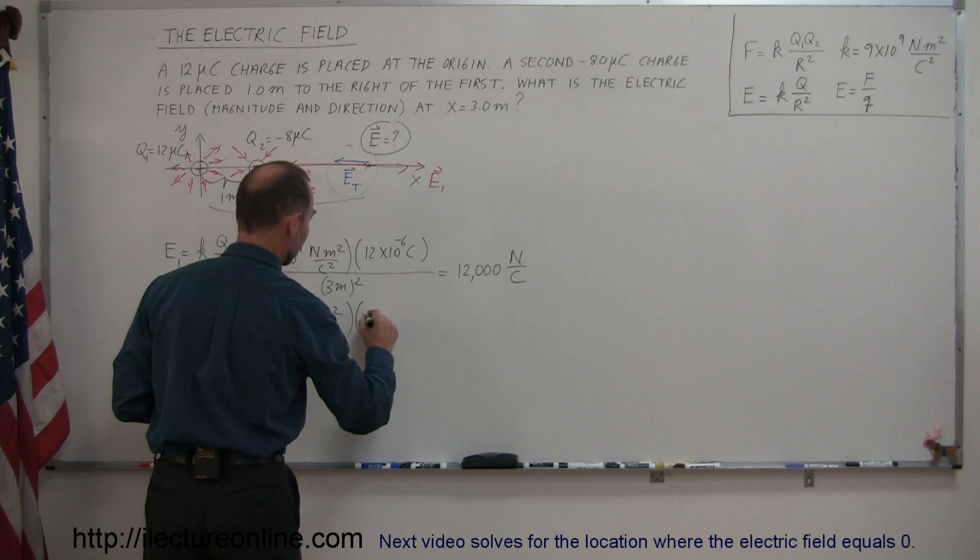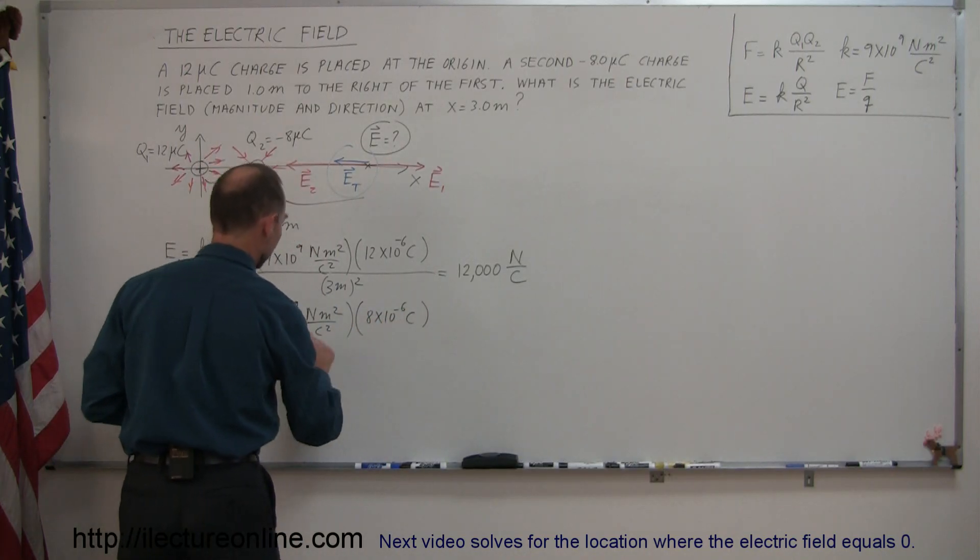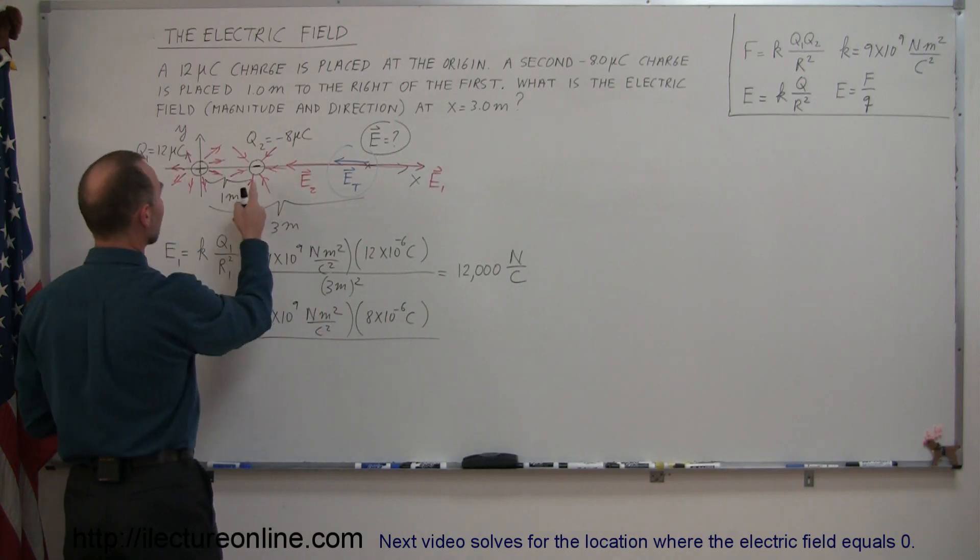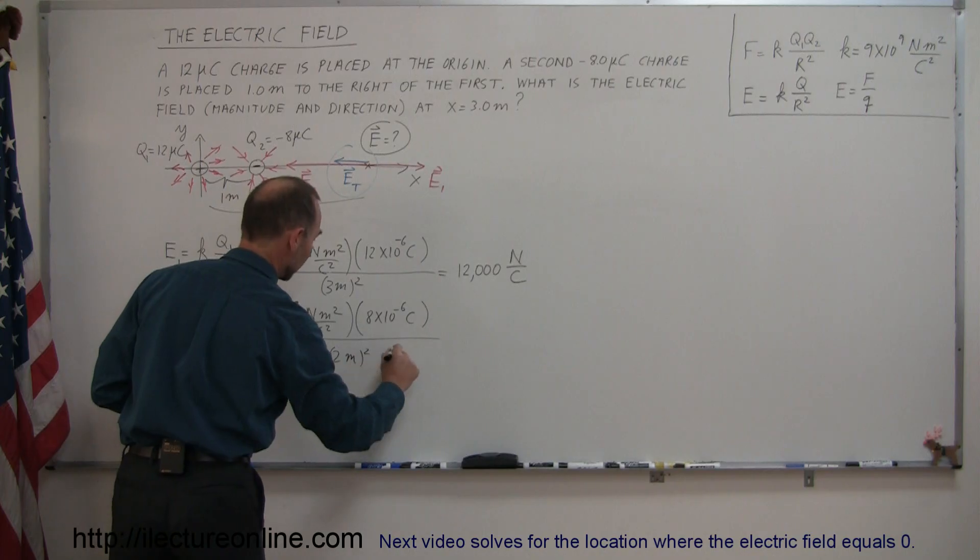So simply write 8 times 10 to the minus 6 coulombs, and the whole thing divided by the distance between here and here would be 3 minus 1, which is 2, 2 meters squared.